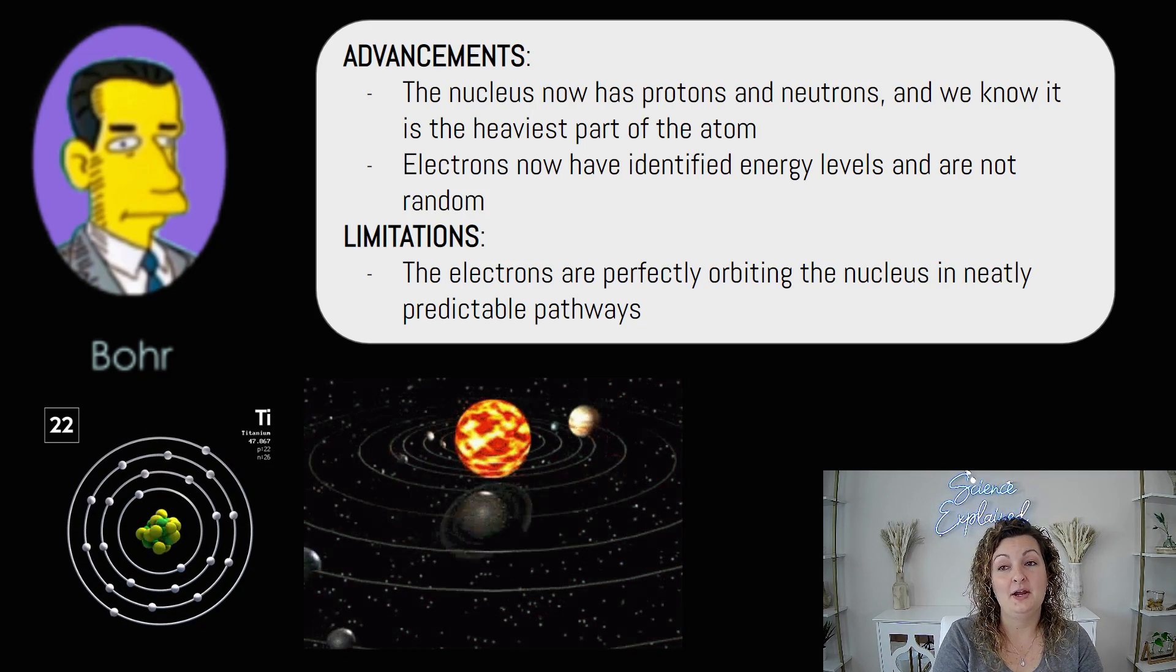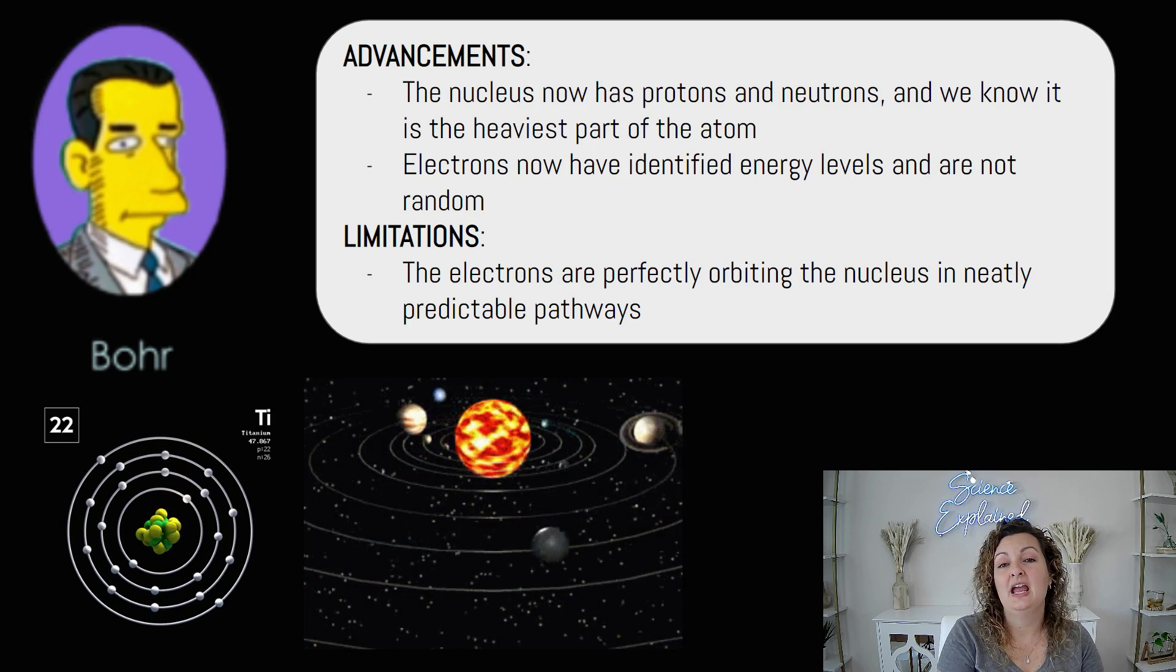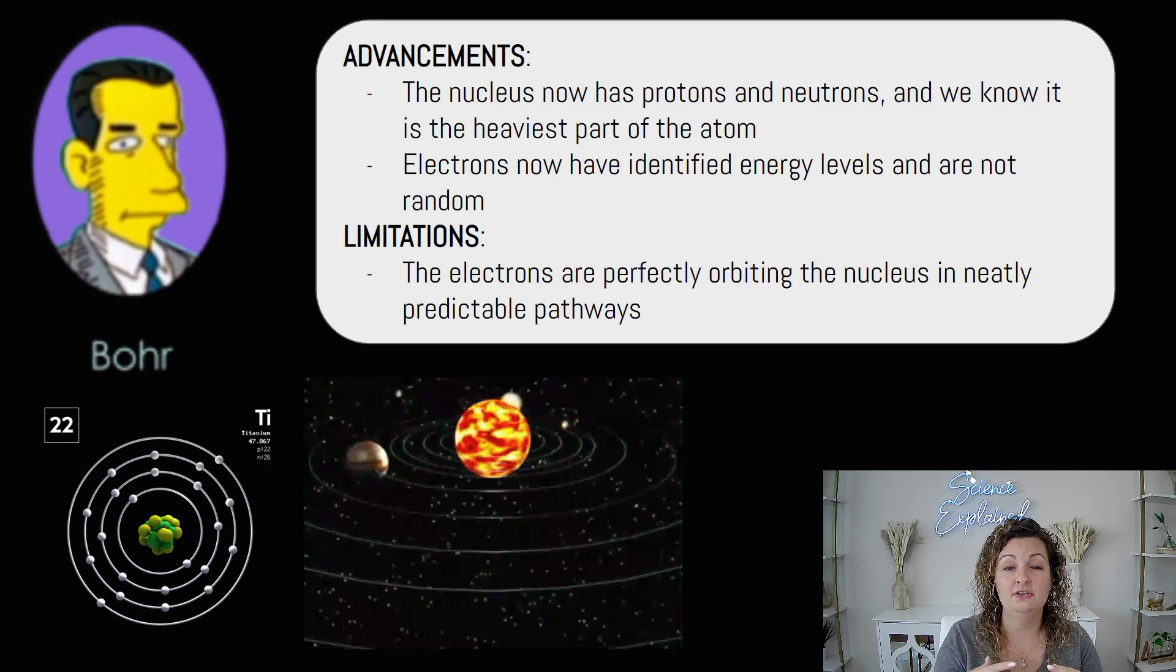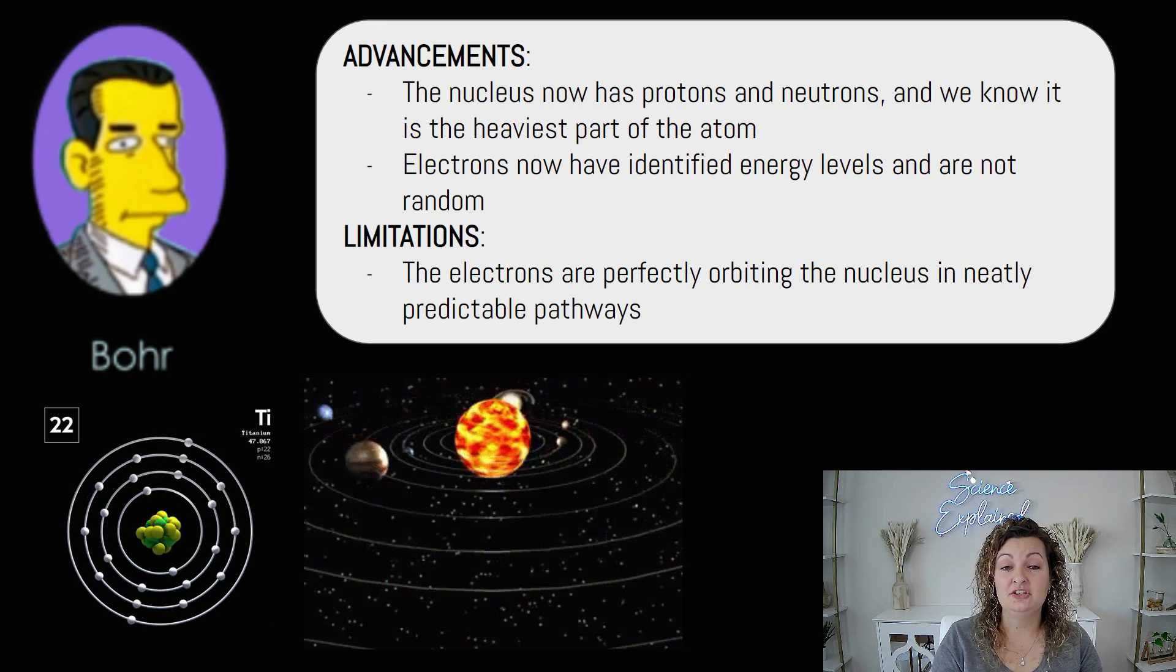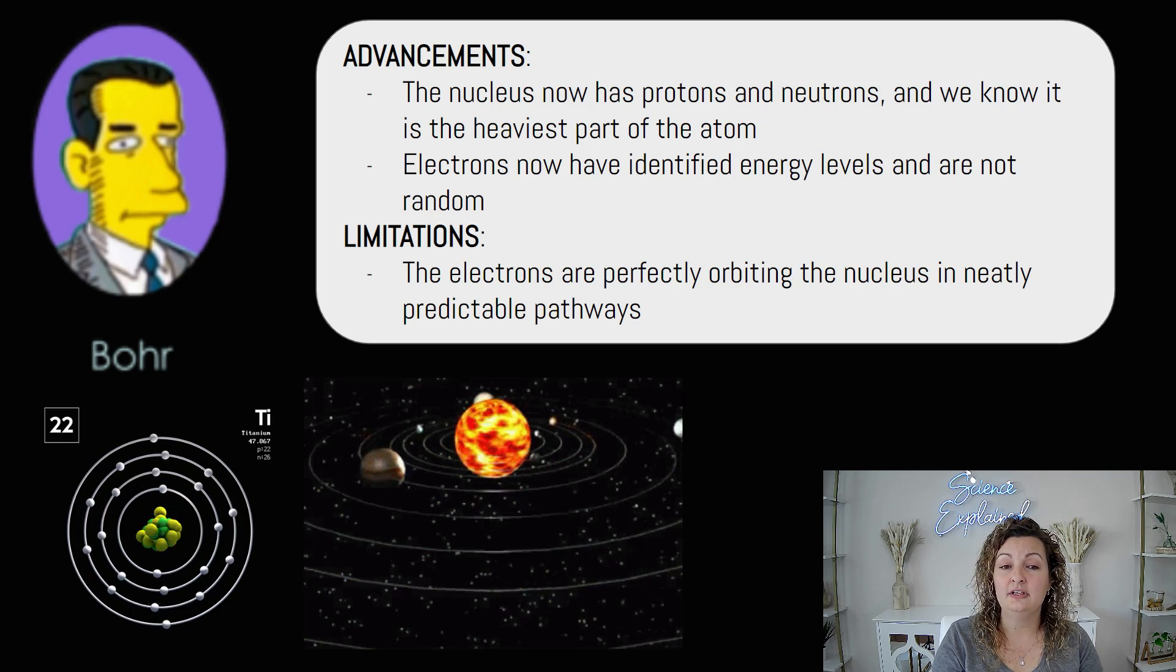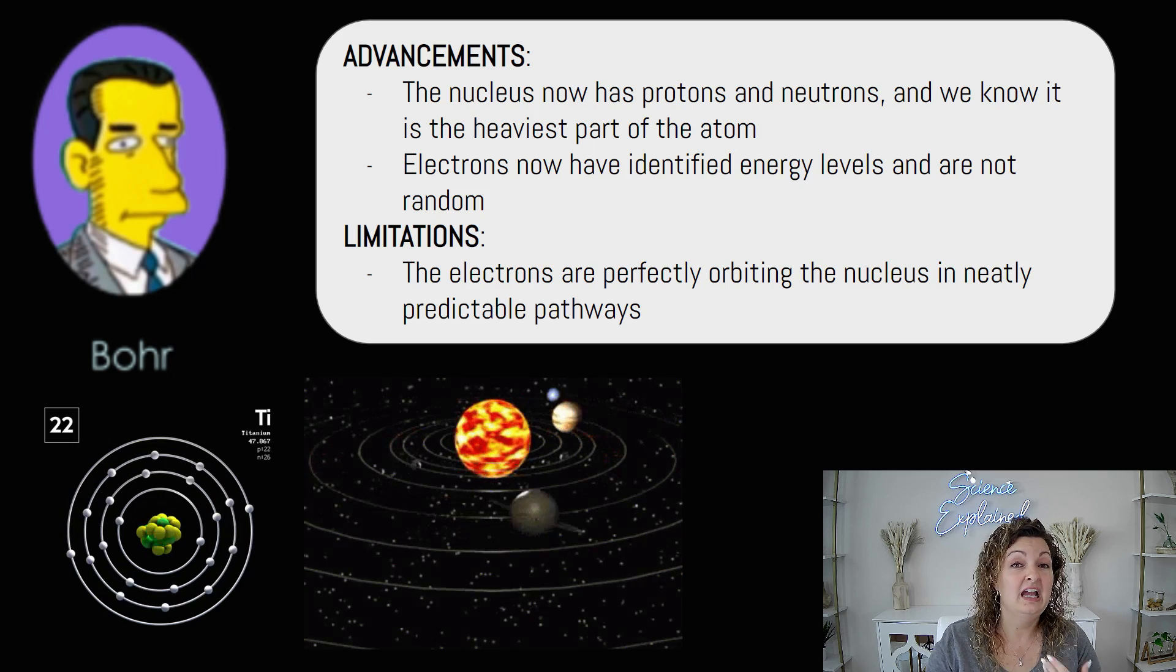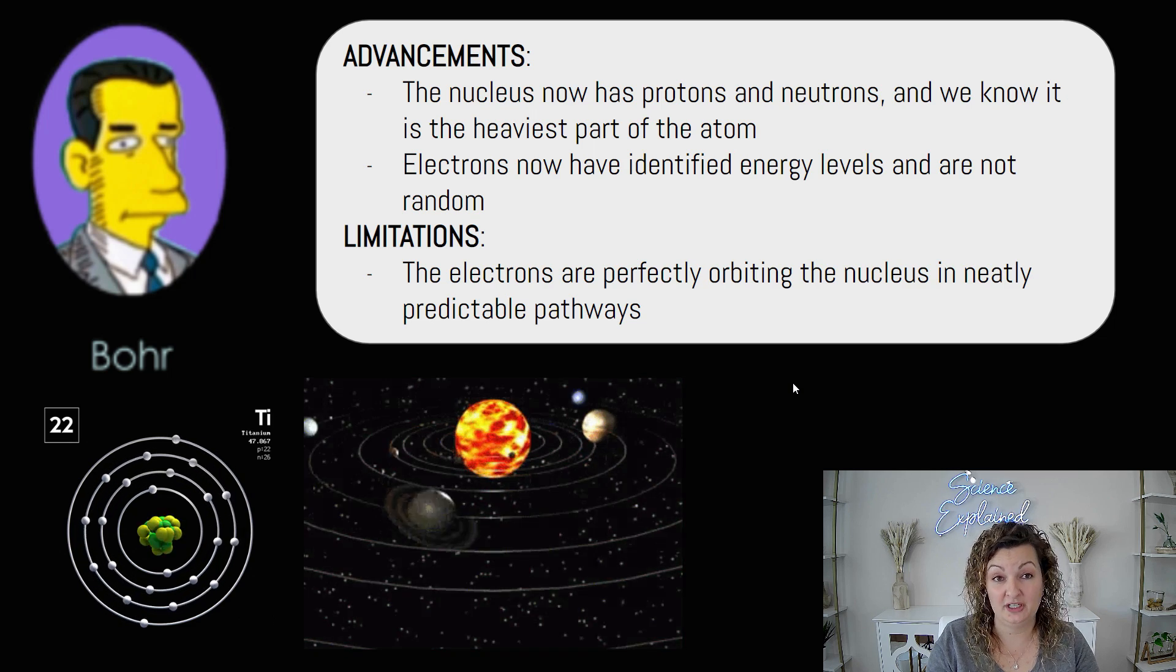So the advancements are there. We have a nucleus, we have protons, we have neutrons. We know that the heaviest part of the atom is now the nucleus, which is true. And electrons have been identified in energy levels and are not random. Limitations, the electrons are perfectly orbiting the nucleus in a neat, predictable pathway. And that is where the limitation is because we know that not to be true anymore.